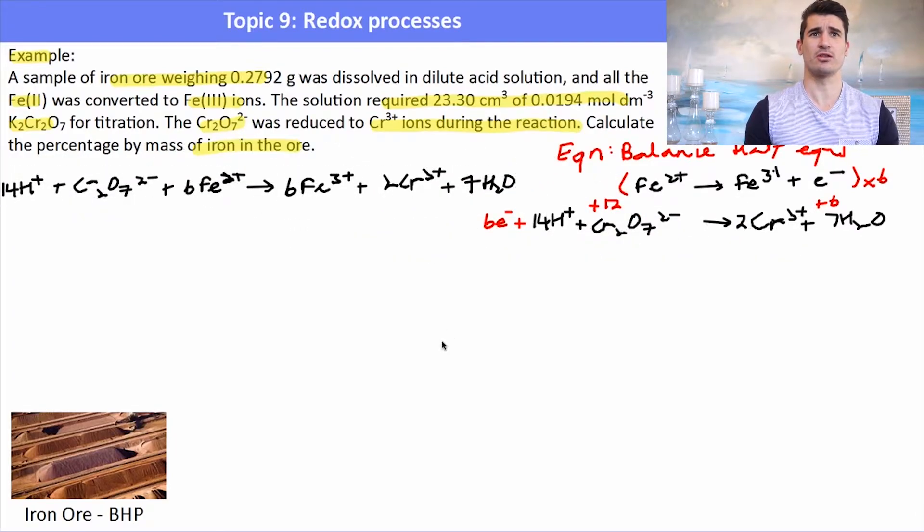After we've done that we can then go through and identify some of the things that we've been given. So we were told that we have 23.30 cm³ of dichromate with a certain concentration. So we start with the thing that we know some information about.